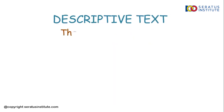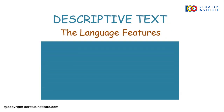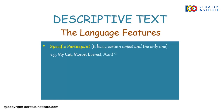So, let's go to the language features of descriptive text. The first is the specific participant — it has a certain object and only one. For example: my aunt, my cat, Mount Everest, Aunt Sally, and Borobudur Temple. We say this is the only one because it is impossible to have the same cat as your friend, and Mount Everest is the only one in the world. They are unique. That is the specific participant.